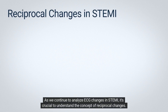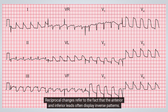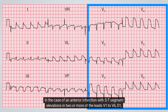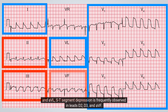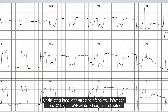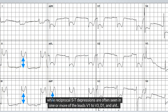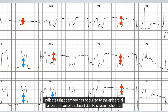As we analyze ECG changes in STEMI, it's crucial to understand the concept of reciprocal changes, which can provide valuable insights into diagnosis. Reciprocal changes refer to the fact that anterior and inferior leads often display inverse patterns. In the case of an anterior infarction with ST-segment elevations in two or more of leads V1–V6, D1, and AVL, ST-segment depression is frequently observed in leads D2, D3, and AVF. Conversely, with an acute inferior wall infarction, leads D2, D3, and AVF exhibit ST-segment elevation, while reciprocal ST-depressions are often seen in leads V1–V3, D1, and AVL. The ST-segment elevation associated with acute myocardial infarction is known as the current of injury, indicating damage to the epicardial or outer layer of the heart due to severe ischemia.